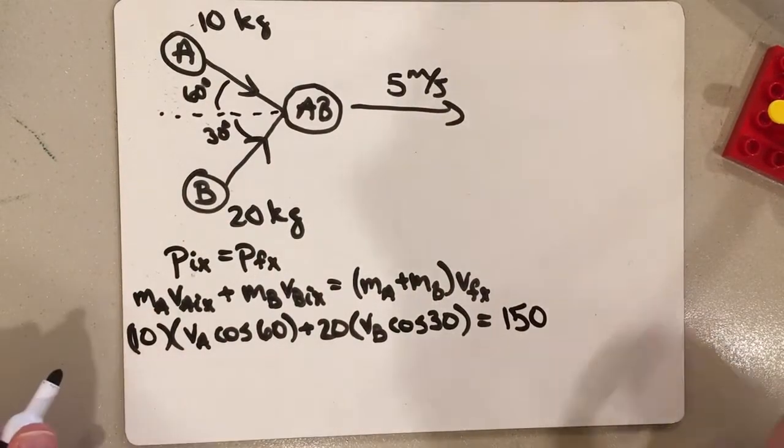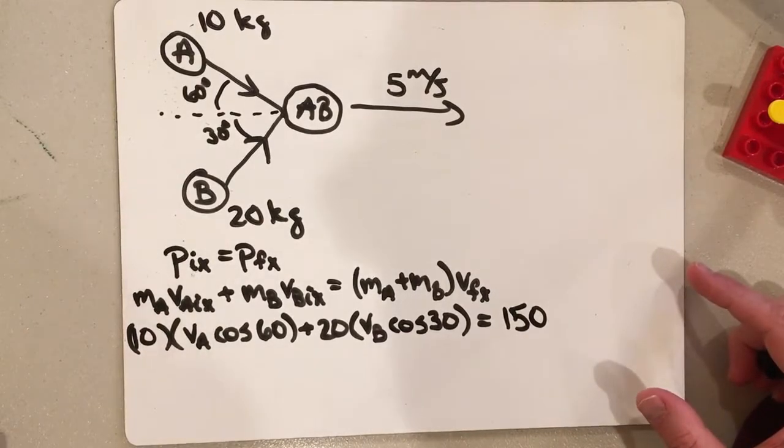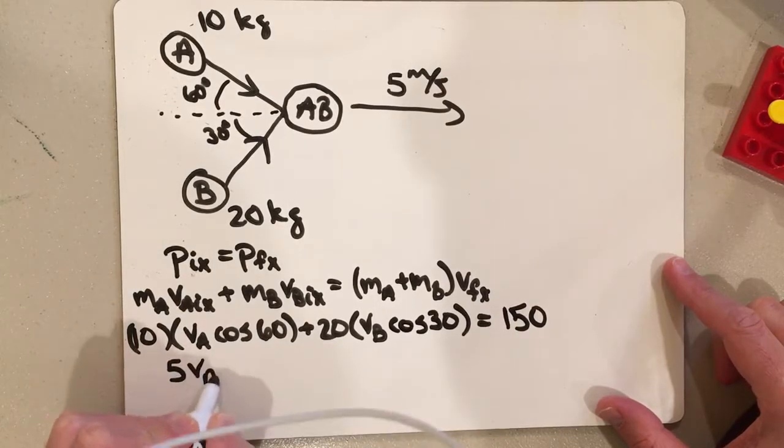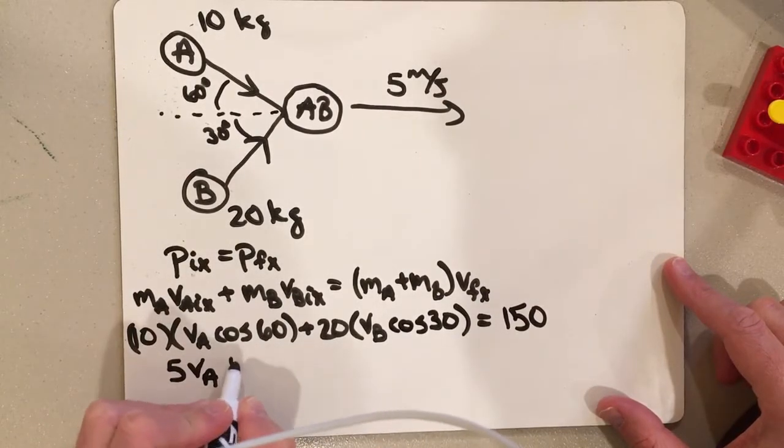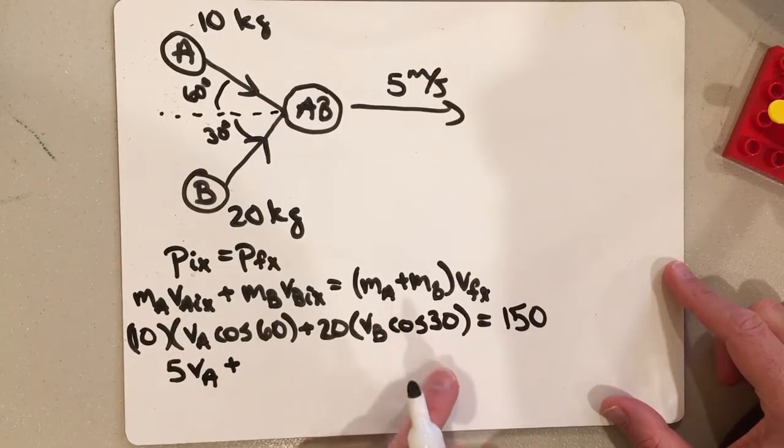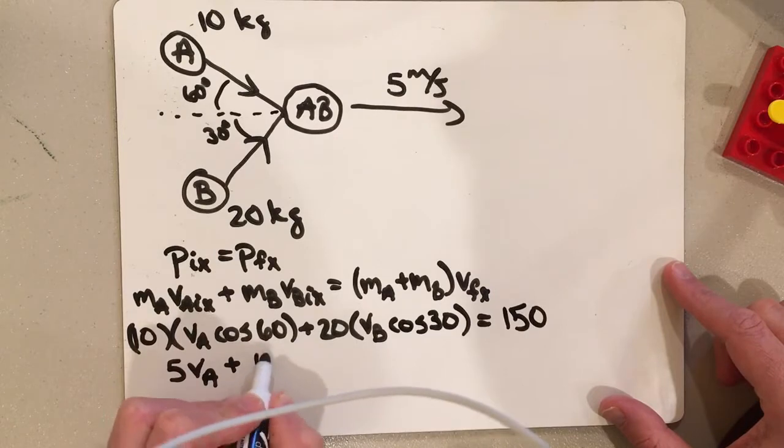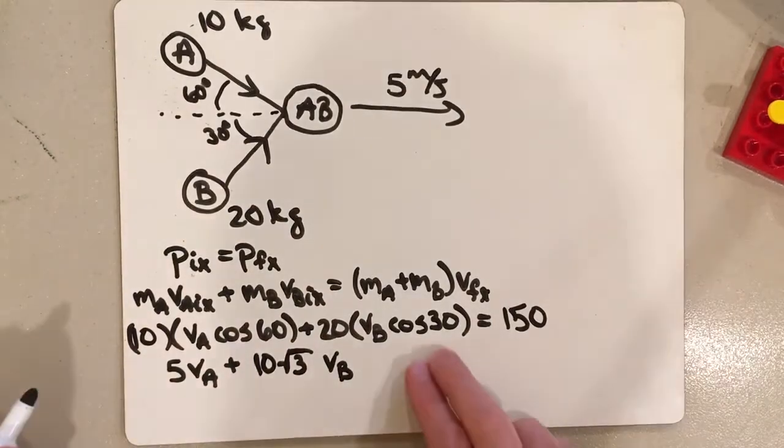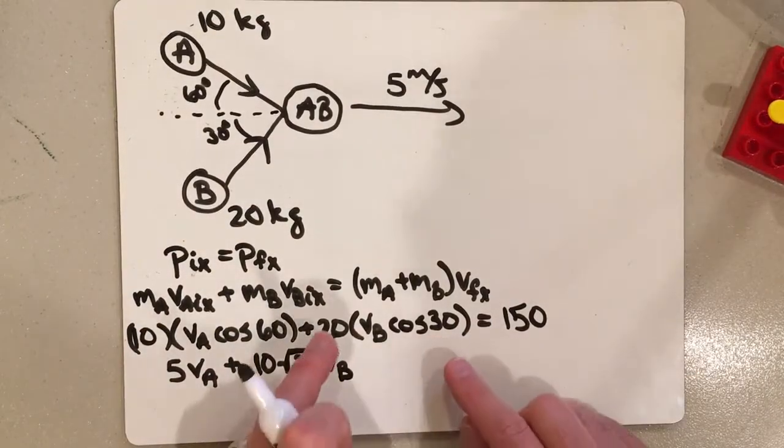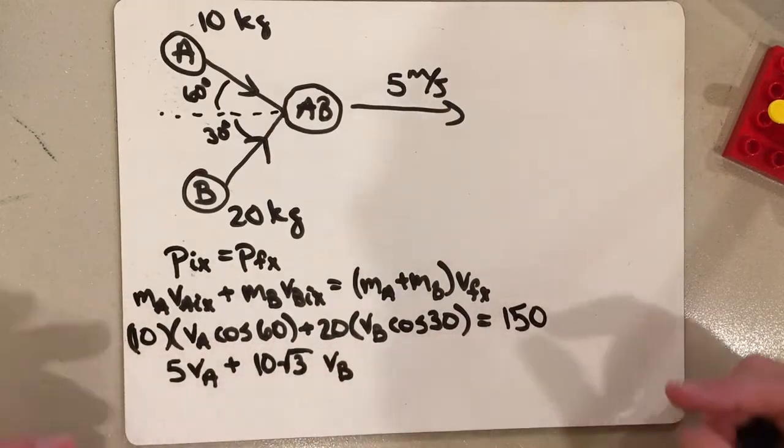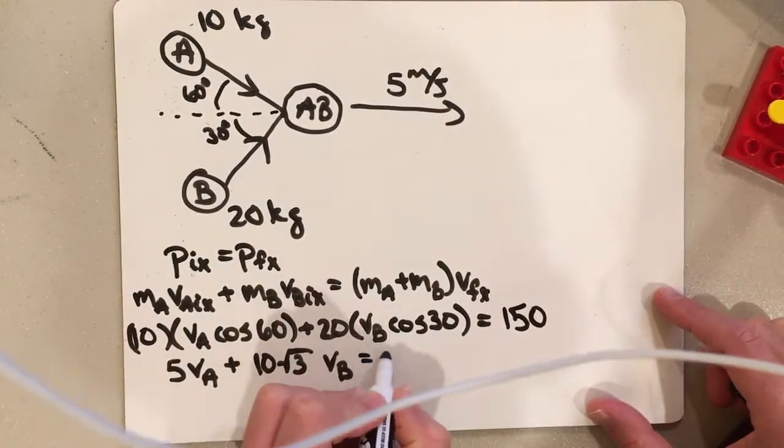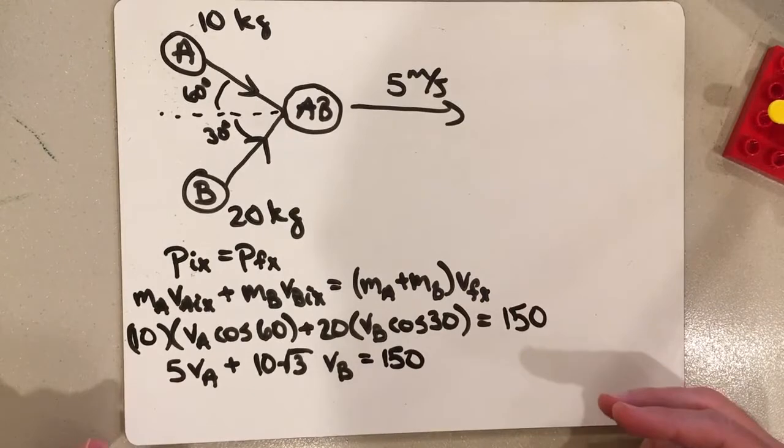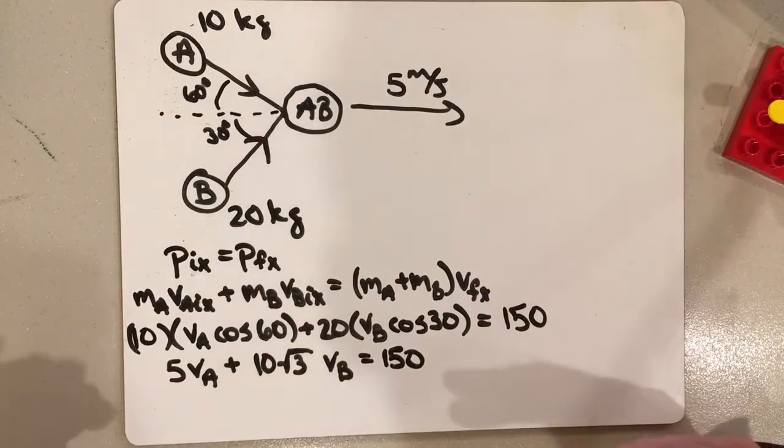And so I can do a little bit more here. The cosine of 60 is 1 half, so this becomes just 5 times VA plus cosine of 30 is the square root of 3 over 2. So this becomes 10 times the square root of 3 times V sub B. 20 divided by 2 is going to give me the 10, and then it's going to be multiplied by that square root of 3. So here's my formula that I've reduced it down to. I have two unknowns, so can't solve it yet.